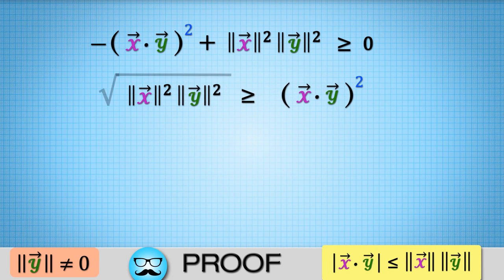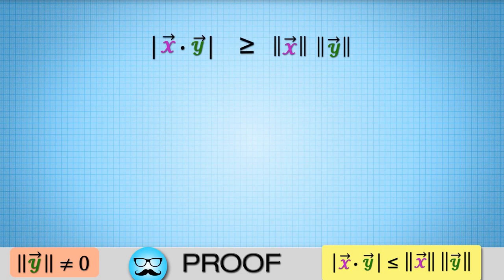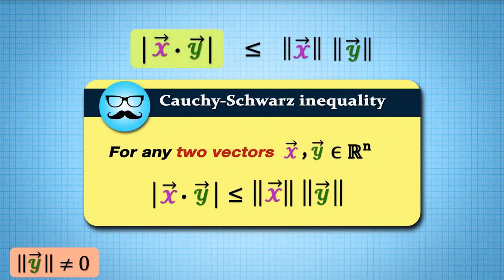Finally, take the square root of both sides to get our desired inequality: the absolute value of x dot y is less than or equal to norm of x times norm of y.